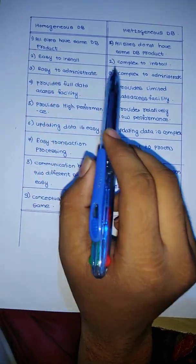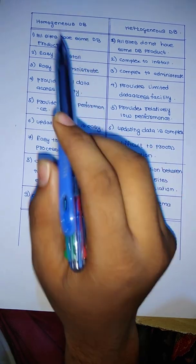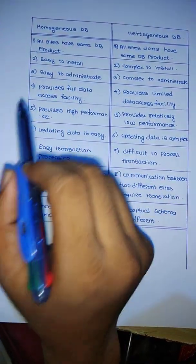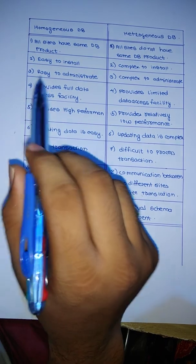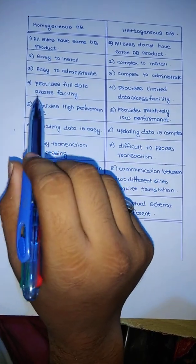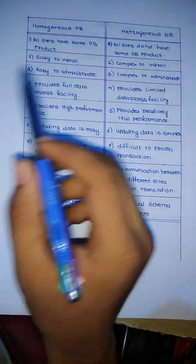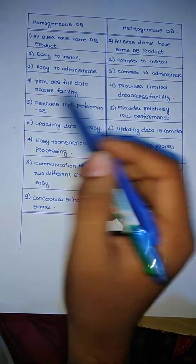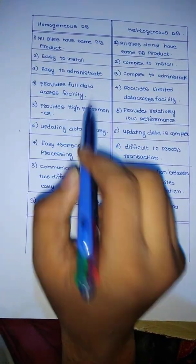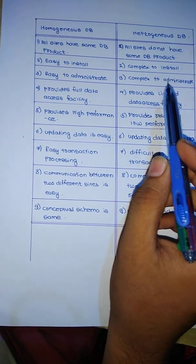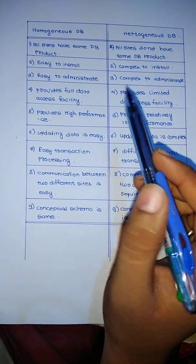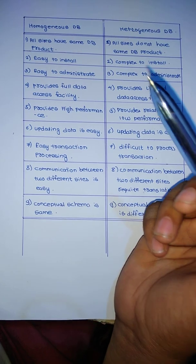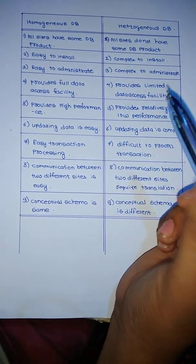For example, within a company if we are installing a homogeneous database, then we will have the same type of operating system running through all the computers, and say we have an SQL database or Oracle database — only one database runs through all the systems. But in a heterogeneous database, we can have all kinds of operating systems and different types of databases as per their need.